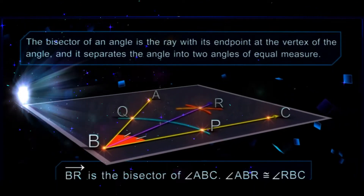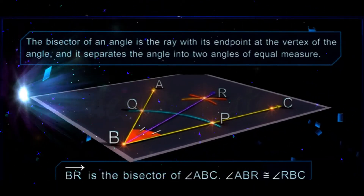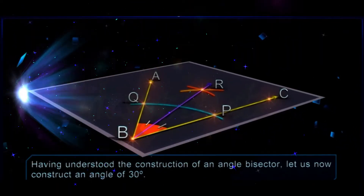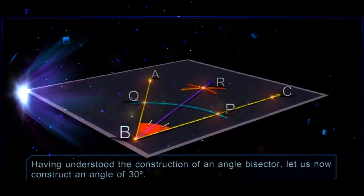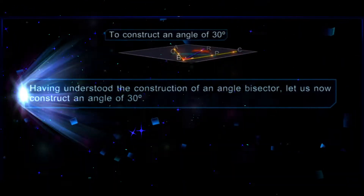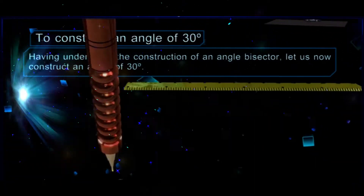Draw ray BR. Ray BR is the bisector of angle ABC. Having understood the construction of an angle bisector, let us now construct an angle of measure 30 degrees.